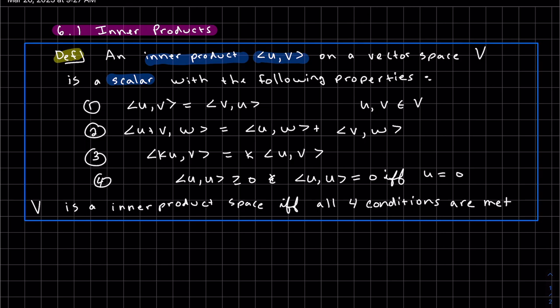The inner product is a scalar and it has the following properties. The first property is u v equals v u, so it's commutative, and u and v are in the vector space. Now remember, they could be vectors, but they could also be functions or whatever the parent vector space is.